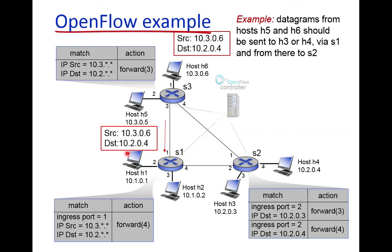The last two bytes of the source IP can be anything — wildcard. The destination is 10.2.0.4, so the first two bytes should be 10.2, which also matches. So this packet matches this entry in S1's flow table. The action is to forward on port number 4. The packet is forwarded on port 4, and the counter for this entry is incremented.